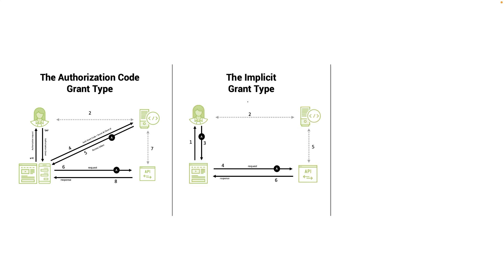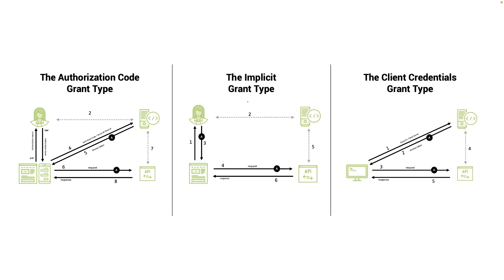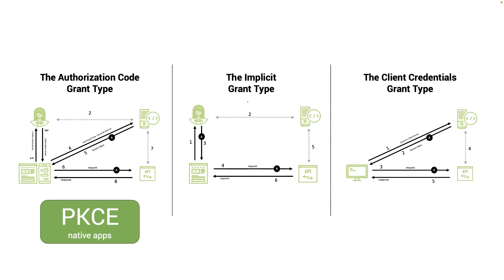The exact OAuth flow varies depending on which grant type you choose. The three main important ones you may see are: the Authorization Code grant type — which is the typical flow we just saw, used in server-side applications and combined with PKCE for native applications like Flutter — the Implicit grant type, and the Credential grant type.